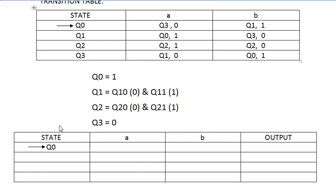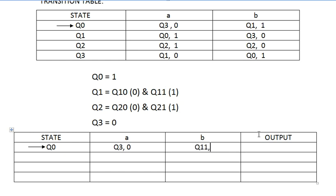Starting with the initial state Q0: Q0 on seeing input A goes to Q3, and Q3 has a fixed corresponding output of 0. So we write Q3 with output 0. Then Q0 on seeing input B goes to Q1. Q1 has output 1, so the state becomes Q1_1, and the output will be 1.